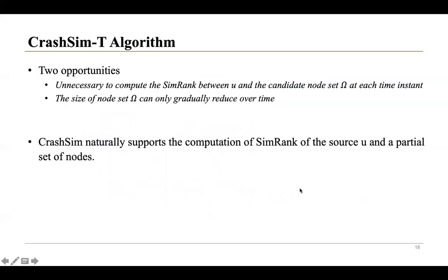Next, I will introduce the algorithm to solve the temporal SimRank queries. To compute SimRank over temporal graphs, there are two opportunities to further improve the efficiency of CrashSim. The first is that due to small changes between adjacent snapshots in temporal graphs, it is unnecessary to compute the SimRank between U and the entire candidate node set Omega at each time instant. The second is that the size of the node set Omega can only gradually reduce over time. Hence, it is unnecessary to compute the SimRank of all nodes, since we may only need estimators for the source U and a partial set of nodes.